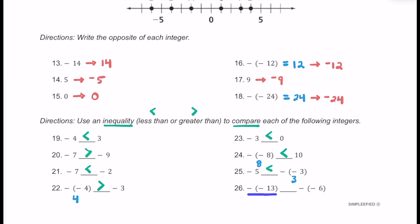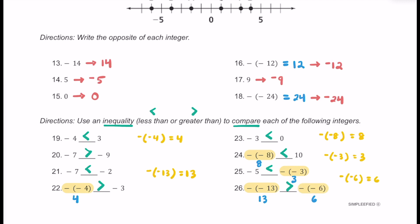For number 26, we have negative negative 13, which is really just 13, and negative negative 6, which is really just 6. When we simplify, we can just compare 13 and 6. 13 is definitely greater than 6. As a key point: negative negative 4 equals 4, negative negative 8 equals 8, negative negative 3 equals 3, negative negative 13 equals 13, and negative negative 6 equals 6.